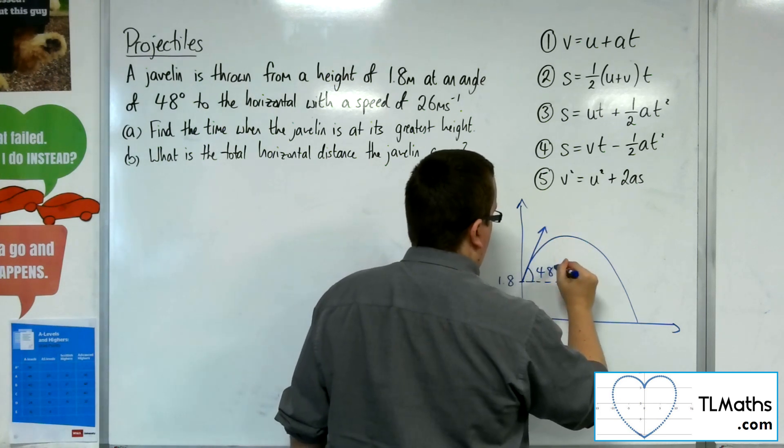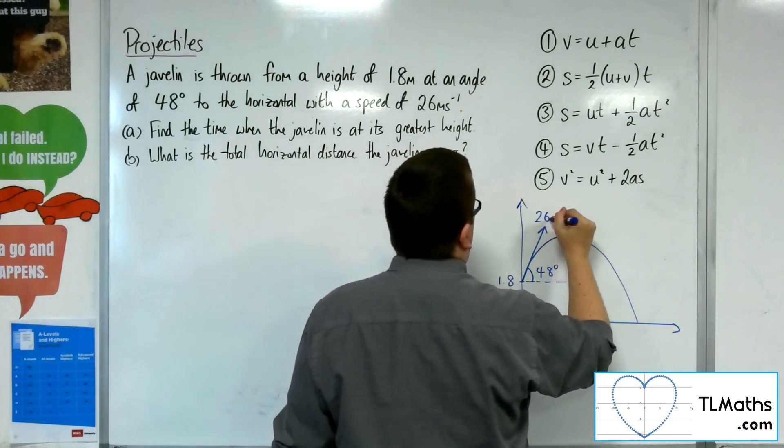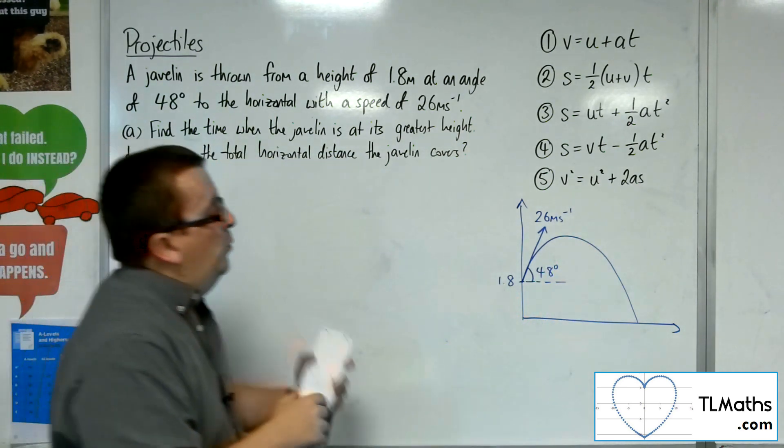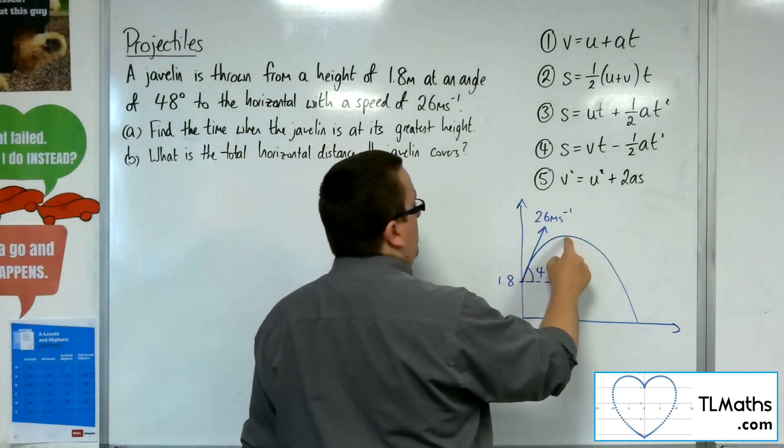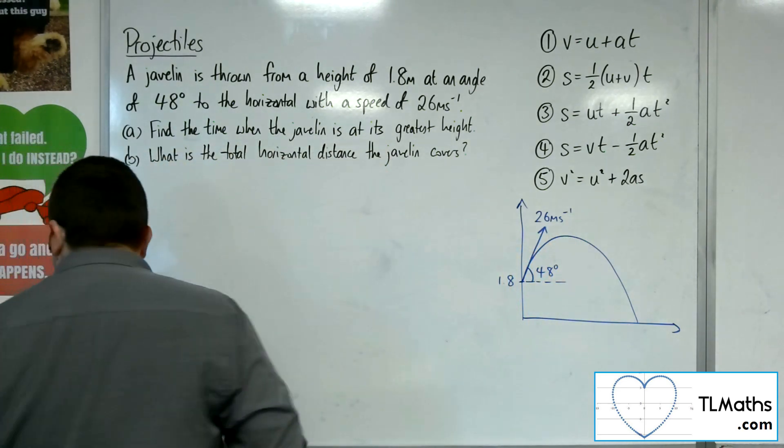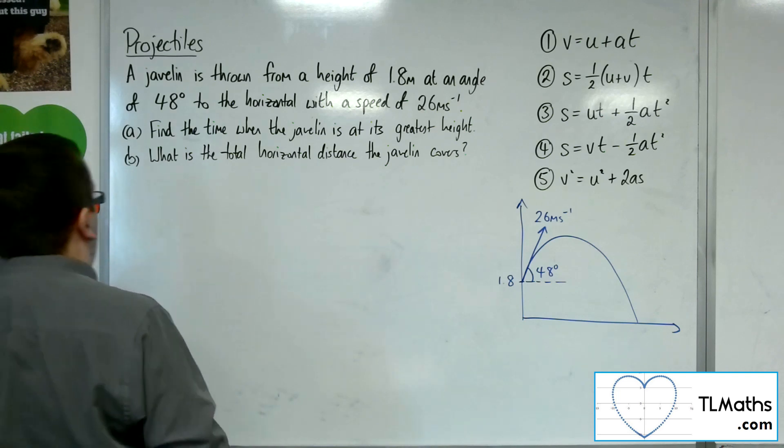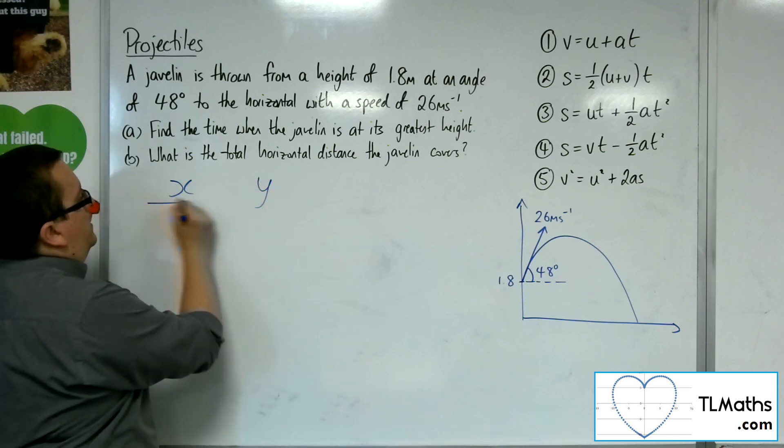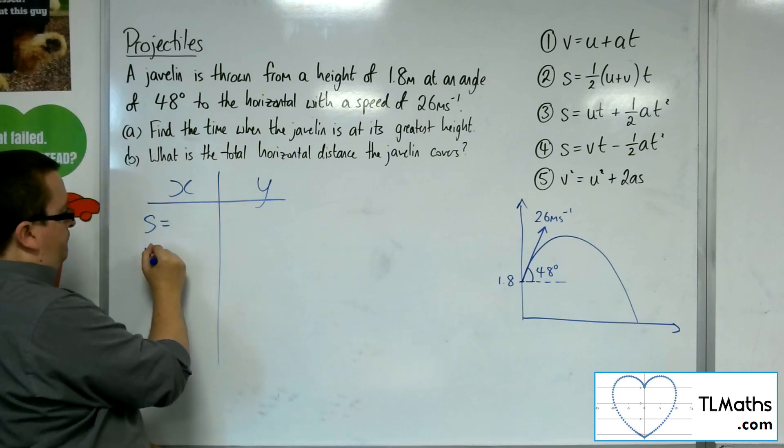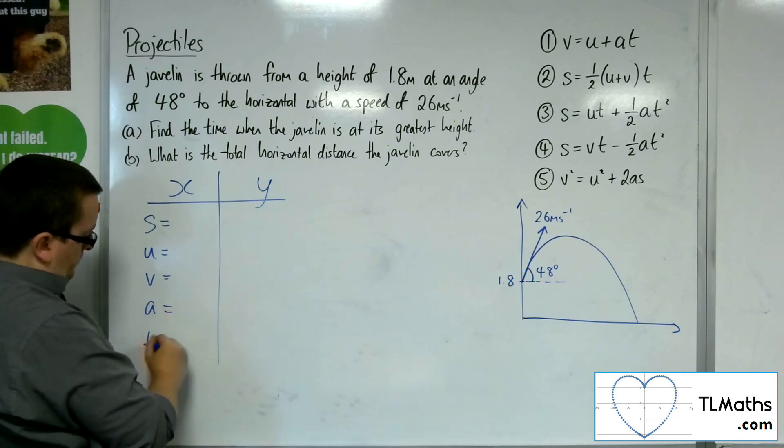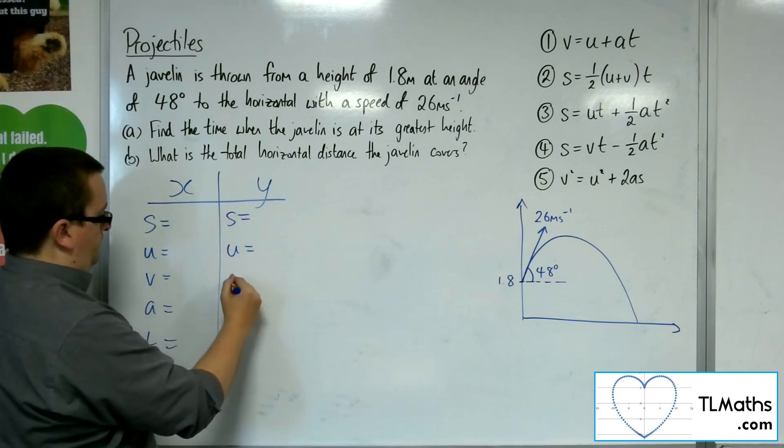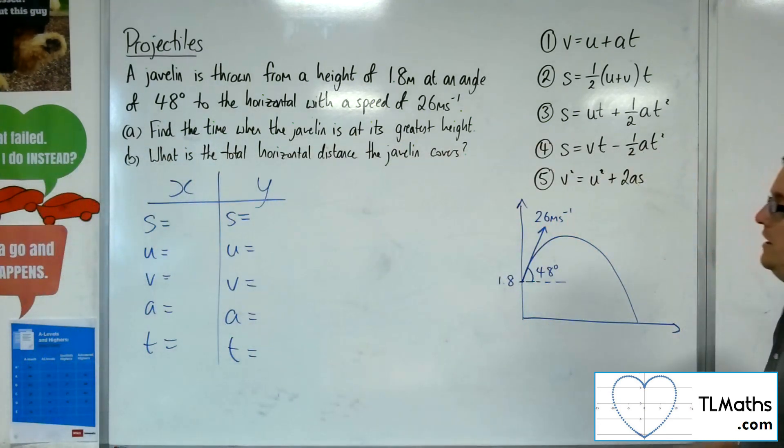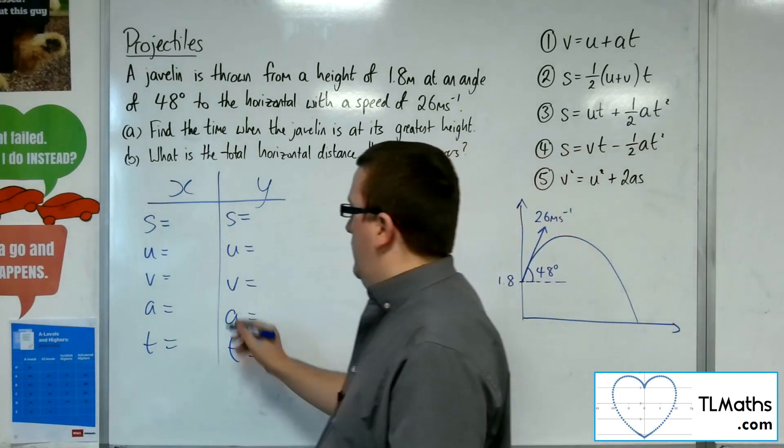So there's our 48 degrees with an initial speed of 26 metres per second. We first of all need to find the time when the javelin is going to be at its highest point. Let's break this down into x and y components. So what do we know? Well, we know that there's no acceleration in the x-direction, and we know the acceleration for y is minus 9.8 for the vertical component.